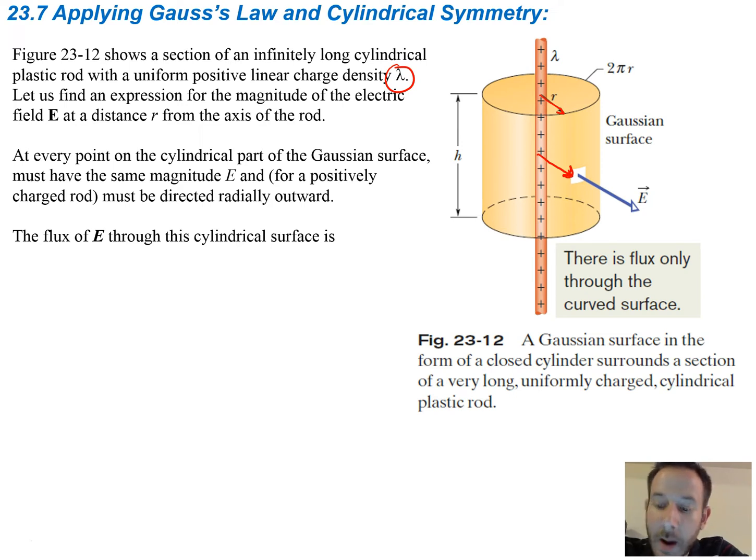We also know that it's going to be directed outwards because it's a positive charge. So the flux of E through this cylindrical surface is going to be shown with our equation for flux. Flux is equal to our electric field times our area, multiplied by the cosine of theta, because it's E dot A. And that's going to be equal to E times the area of the cylinder, which is 2πR times H, which is the height of the cylinder.